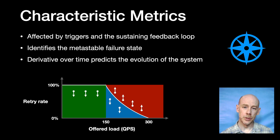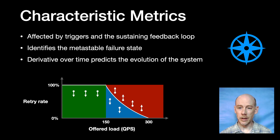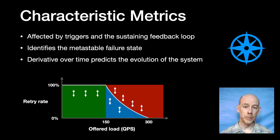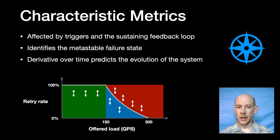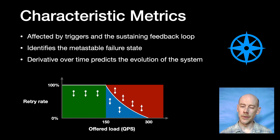One of the most impactful research questions around metastable failures would be to find a systematic way to identify them ahead of time. A promising line of attack is to identify what we call characteristic metrics — a set of measurements of the system that identifies the metastable failure state and whose evolution predicts the state transitions. In our example, a characteristic metric would be the retry rate. The retry rate is low in the vulnerable state and high in the metastable failure state. By giving characteristic metrics their own axes and putting load on another, we can define a safe operating envelope — a map of the region in which the feedback loop is not strong enough to self-reinforce.